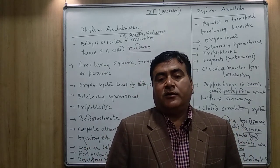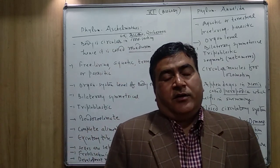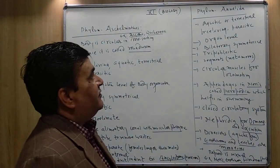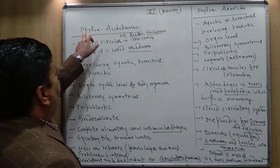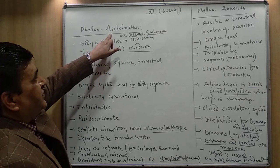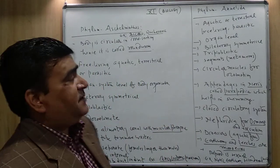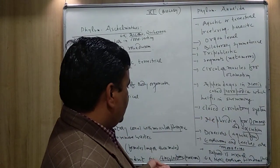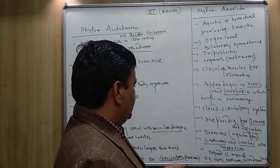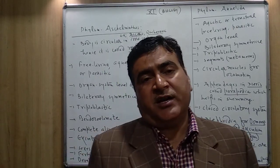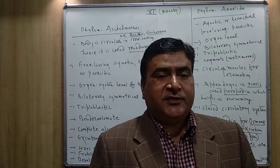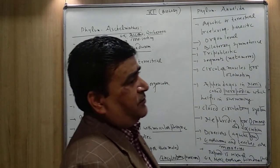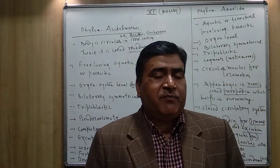Welcome back to this class. Today we will study about two phylums: Phylum Aschelminths and Phylum Annelida. The first phylum, Aschelminths, includes organisms like Ascaris lumbricoides, a parasitic worm, Wuchereria bancrofti, the filarial worm, and hookworm. All these worms are kept into Phylum Aschelminths.